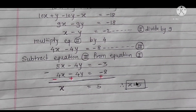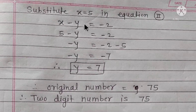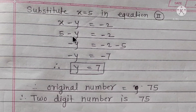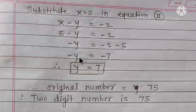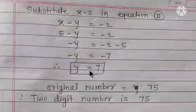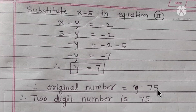X value is 5. Substituting X equals 5 into Equation 2: 5 minus Y equals minus 2, so minus Y equals minus 7, therefore Y equals 7. Since Y is the tens place digit and X is the units place digit, the 2-digit number is 75. The 2-digit number is 75.